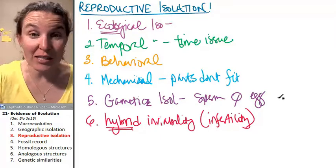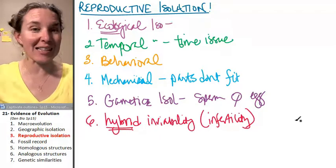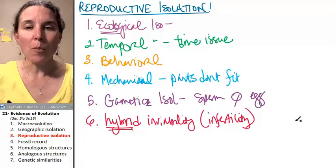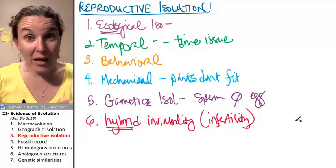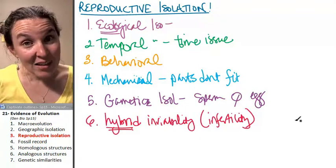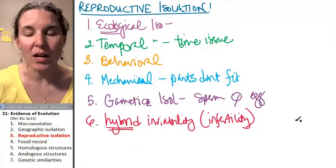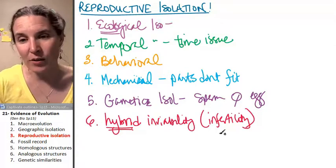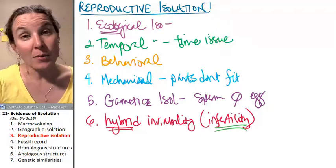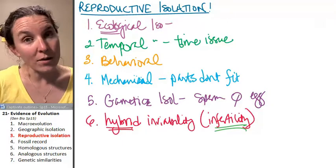Two different species, the sperm and the egg, they combine. This is awesome. But either the fetus dies before it can be born or the fetus is infertile. And who's this an example of, you guys? That's my friend, the horse and the donkey.